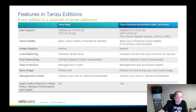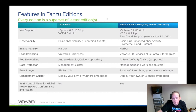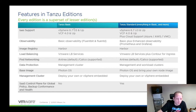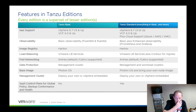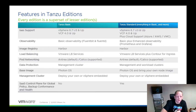For IaaS support, notice that every edition is a superset of the lesser editions. Tanzu Standard includes everything in Basic, and as we get into Advanced and Enterprise, each includes everything from the editions below it. With Tanzu Standard, you get everything in Basic plus support for running on cloud environments.